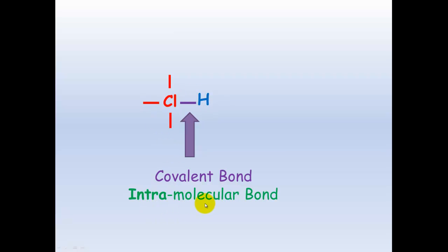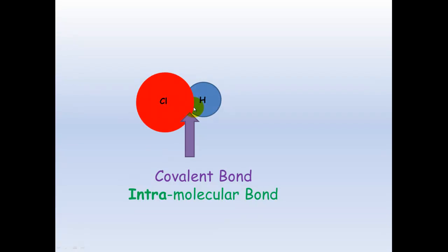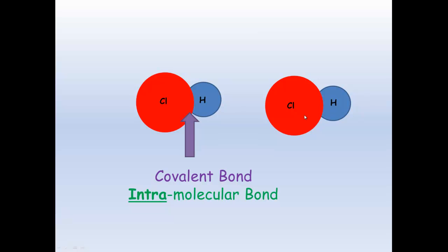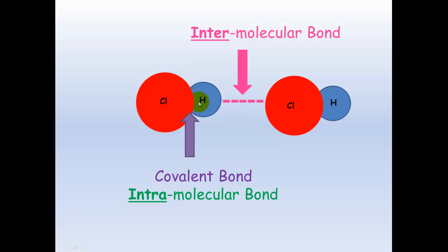Covalent bonds are intramolecular bonds — intra meaning within the molecule. This term often gets confused with inter. A helpful analogy: the intranet at school is the network within the school, so an intramolecular bond is the bond within the molecule. When another hydrogen chloride molecule comes along, the bond that forms between the two molecules is the intermolecular bond — like the internet connecting different schools.